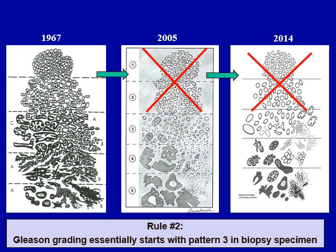An important understanding in contemporary practice is that even though pattern one and two theoretically exist, due to their misleading clinical implications, their application in day-to-day practice is not recommended. Rule number two is that Gleason grading essentially starts with pattern three in prostate biopsy specimens.